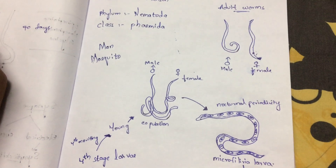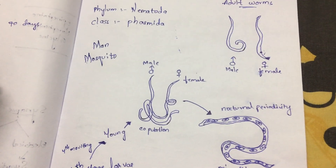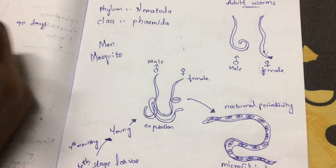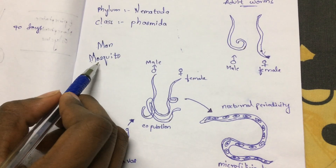Now it mainly undergoes its cycle. The cycle undergoes in two stages — one in man and another in mosquito.